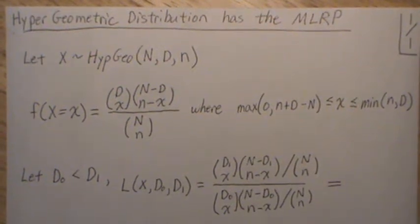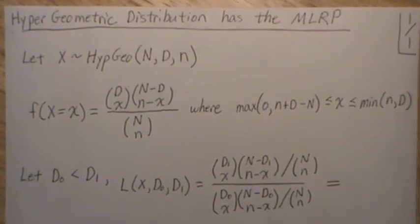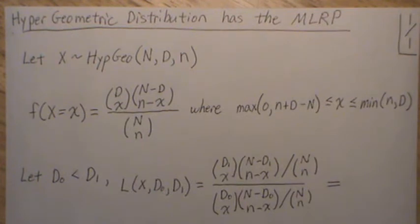Hello, this is the next video in a playlist on hypothesis testing, and here we're going to show that the hypergeometric distribution has the monotone likelihood ratio property.